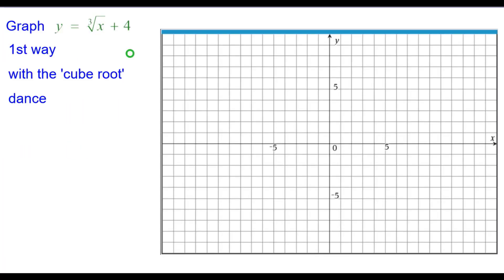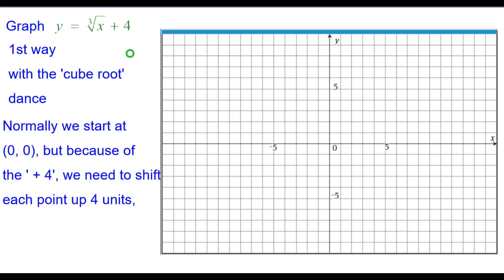First way is we're going to use what I call the cube root dance. Normally we would start at the origin, but because of the plus 4 in the equation, we need to shift each point up 4 units, including that origin to (0,4). So we'll start there.